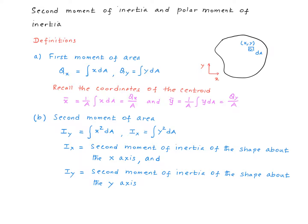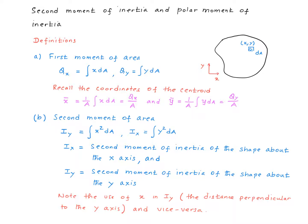Ix is the second moment of inertia about the x-axis. Iy is the second moment of inertia about the y-axis. Note that x is used in the definition of Iy, the second moment of inertia about the y-axis. In other words, when we calculate the second moment of inertia about the y-axis, we use the distance perpendicular to that axis, which is x. And similarly, we have y in the definition of Ix.